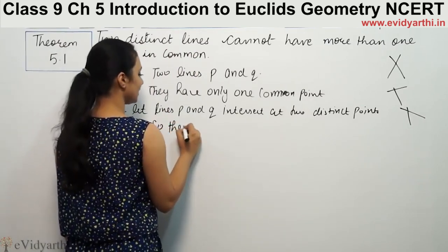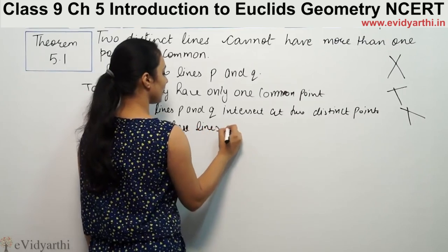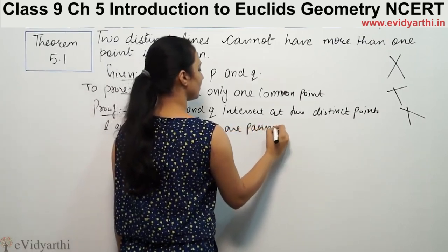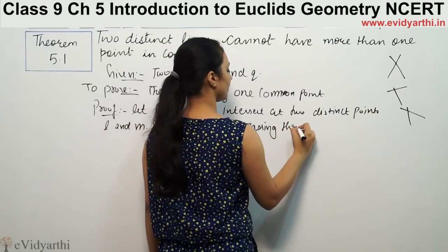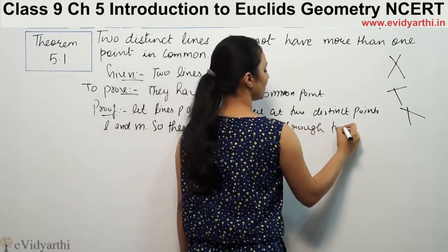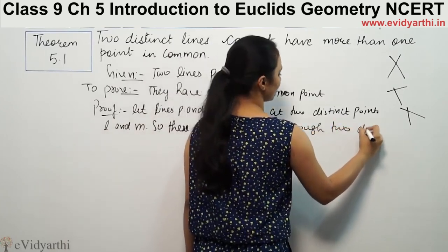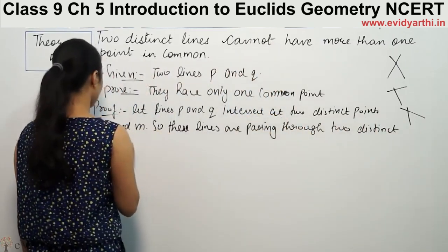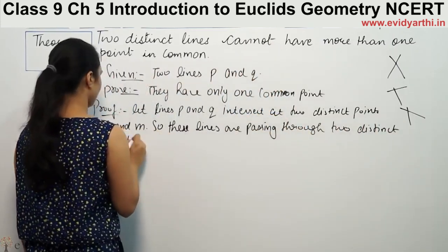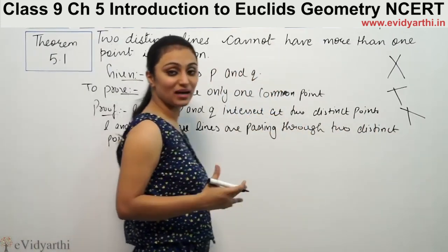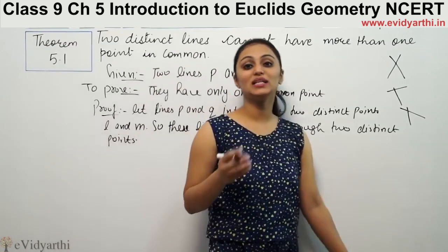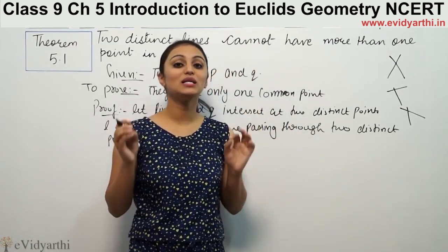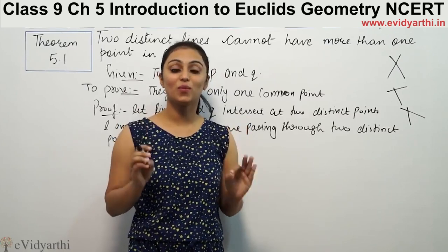So these lines are passing through two distinct points. So we have to prove that there can be only one point. If two distinct lines can have only one and only one point in common.